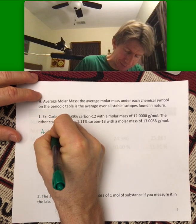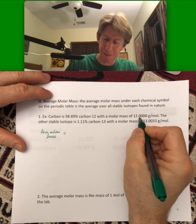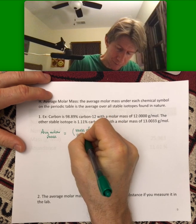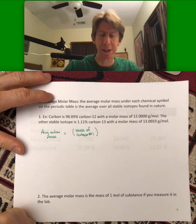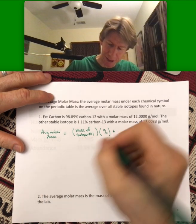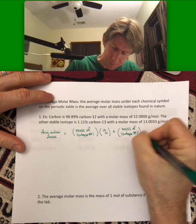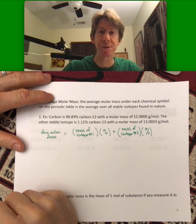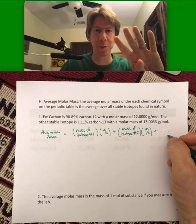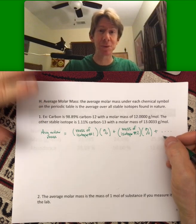Average molar mass is going to be the mass of isotope number 1 times its percent plus mass of isotope number 2 times its percent. This is a completely general formula, so there could be a third one, there could be a fourth one.